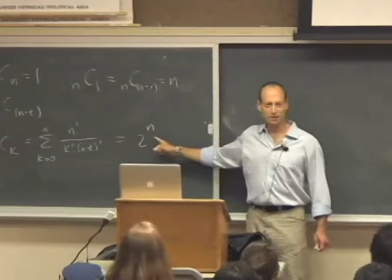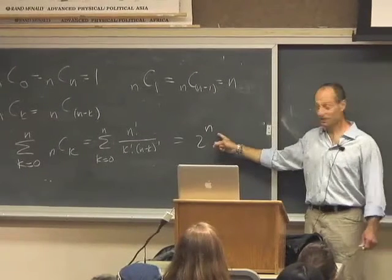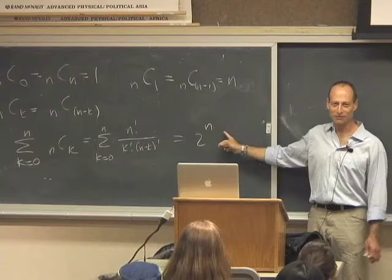The number of subsets I'm going to end up with is going to get pretty big pretty quickly if I let n be very big, right?